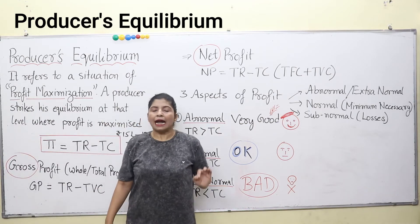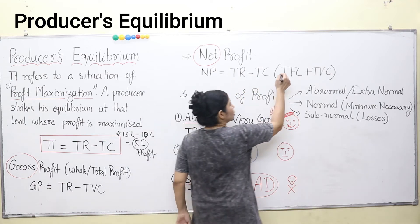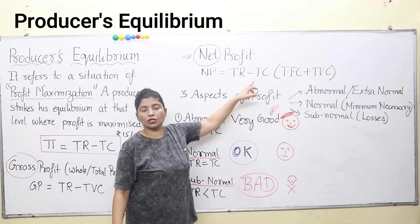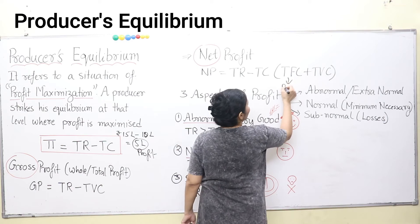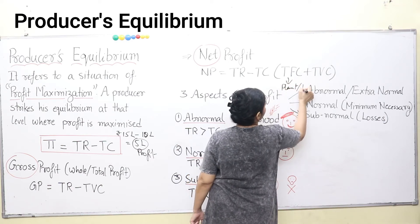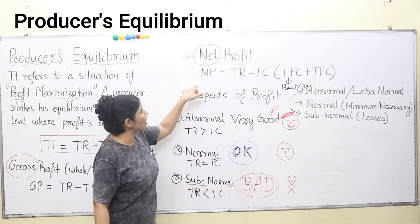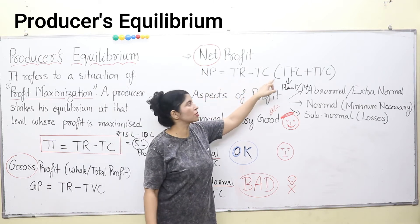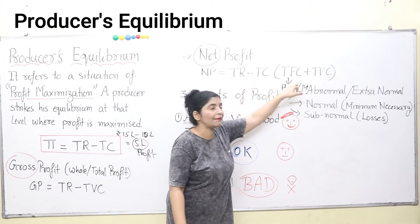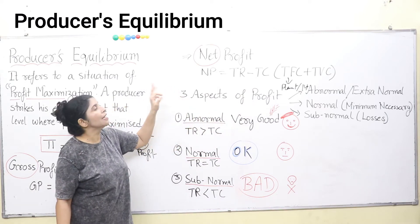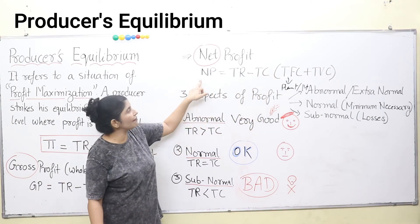Net profit is equal to total revenue minus total cost, where total cost equals total fixed cost plus total variable cost. Total fixed cost is the cost of your plant and machinery — it's a one-time investment — and depreciation of machineries is also included. So when we calculate net profit, we deduct total fixed cost as well. In gross profit we deduct only total variable cost, but here we deduct both fixed and variable cost from total revenue to get net profit.